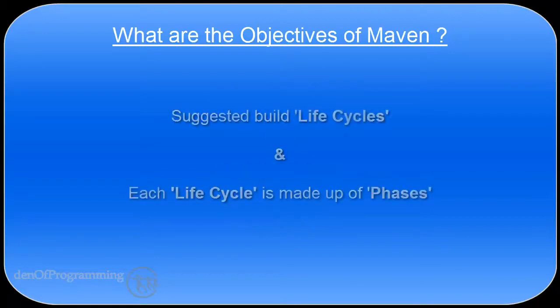The second way Maven makes life for a developer easier is that it provides a uniform build system. Maven suggests a standard way to build a project. This is done by suggesting a build lifecycle, and the build lifecycle is made up of a number of phases. Once you familiarise yourself with the build cycles and the phases, you will automatically know the build process for every other Maven project.